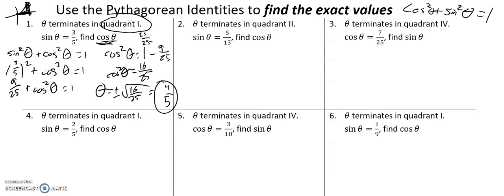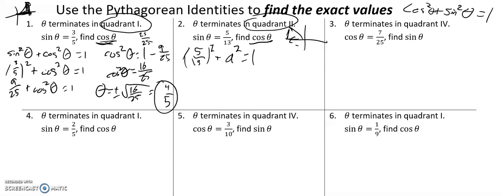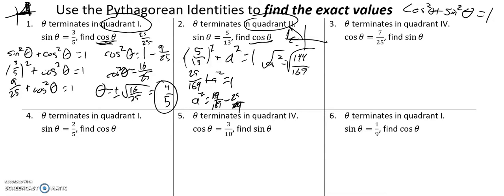All the other problems are basically the same way, so I'm going to crank them out. This is in quadrant two — sine is positive, but cosine is negative, so I'm going to negate my answer. Sine squared plus cosine squared is one. Five-thirteenths squared plus cosine — I'll call it a — equals one. Five-thirteenths squared is twenty-five over one-sixty-nine. Subtract that from both sides: a squared equals one-sixty-nine over one-sixty-nine minus twenty-five over one-sixty-nine, which is one-forty-four over one-sixty-nine. Square root of one-forty-four is twelve, square root of one-sixty-nine is thirteen, and since it's in quadrant two, it's negative. So cosine of theta is negative twelve-thirteenths.